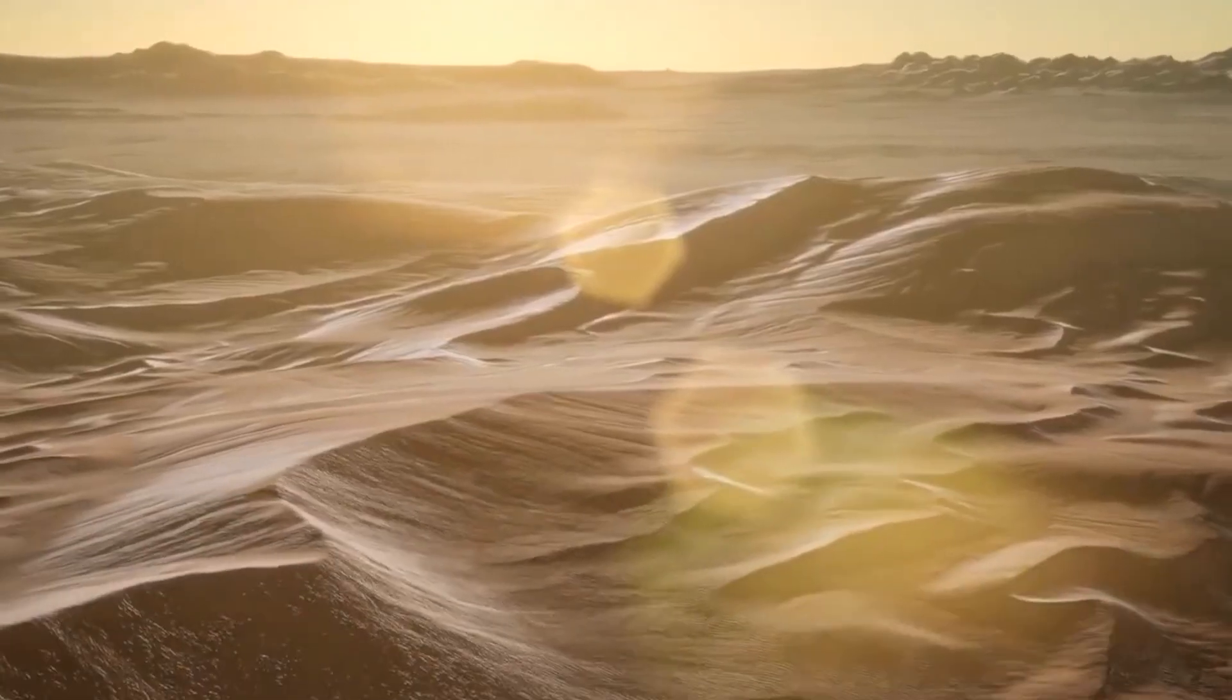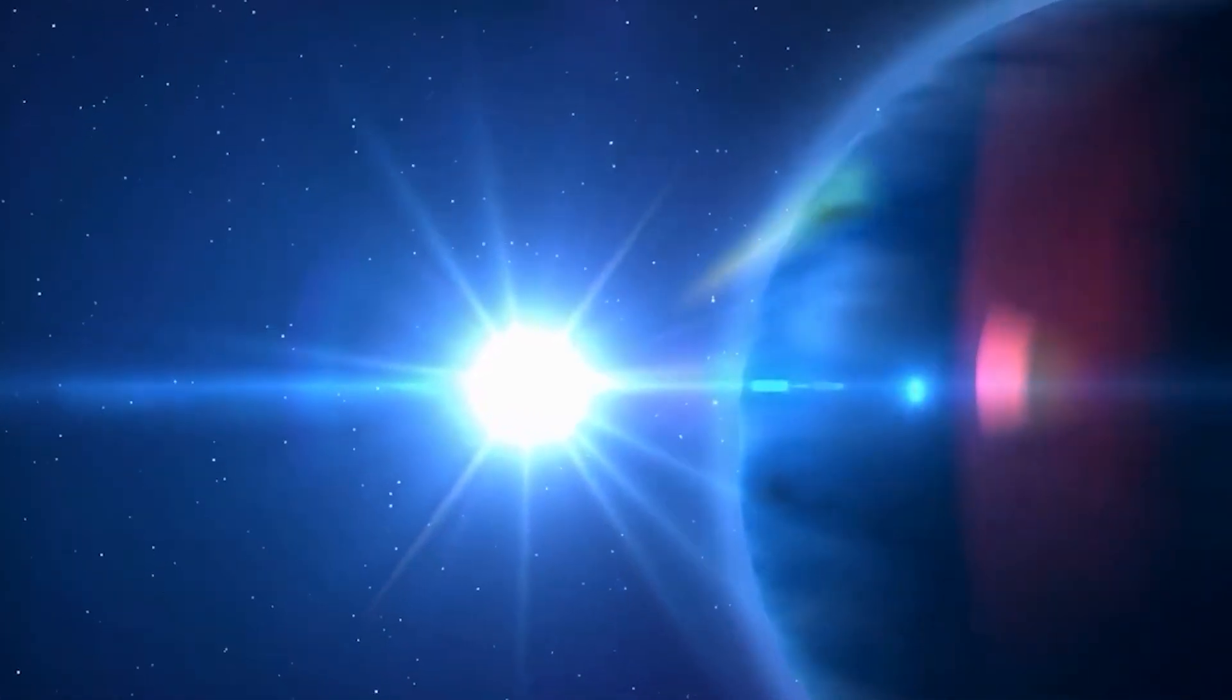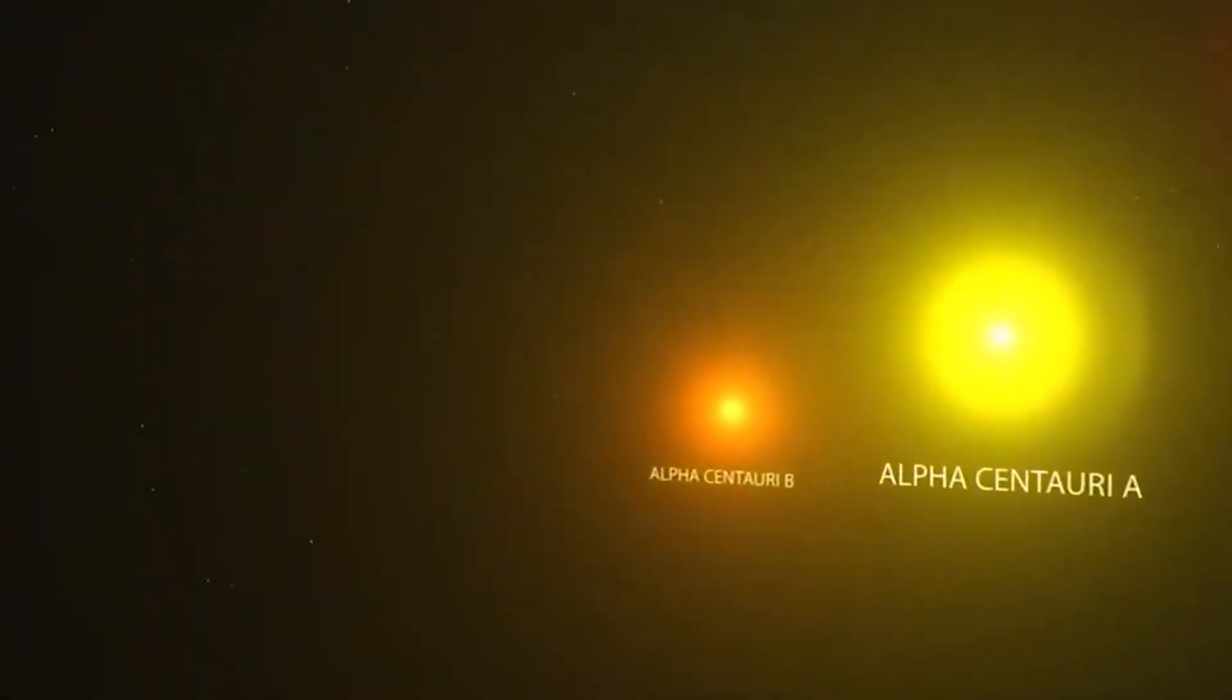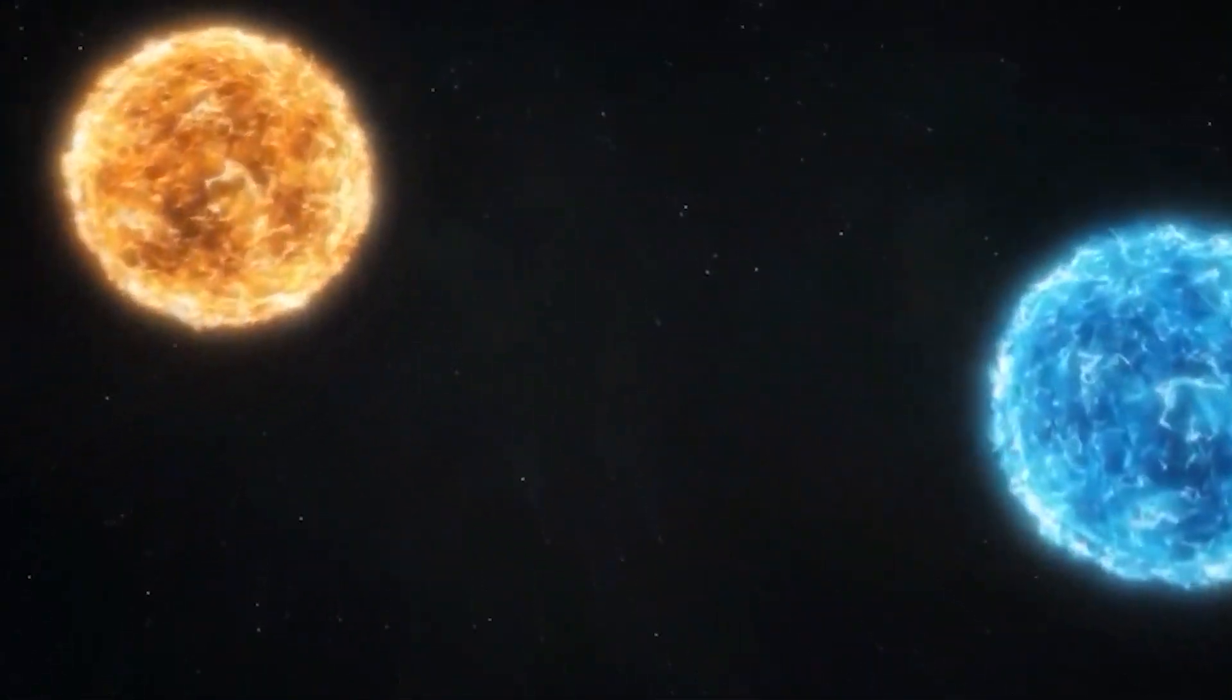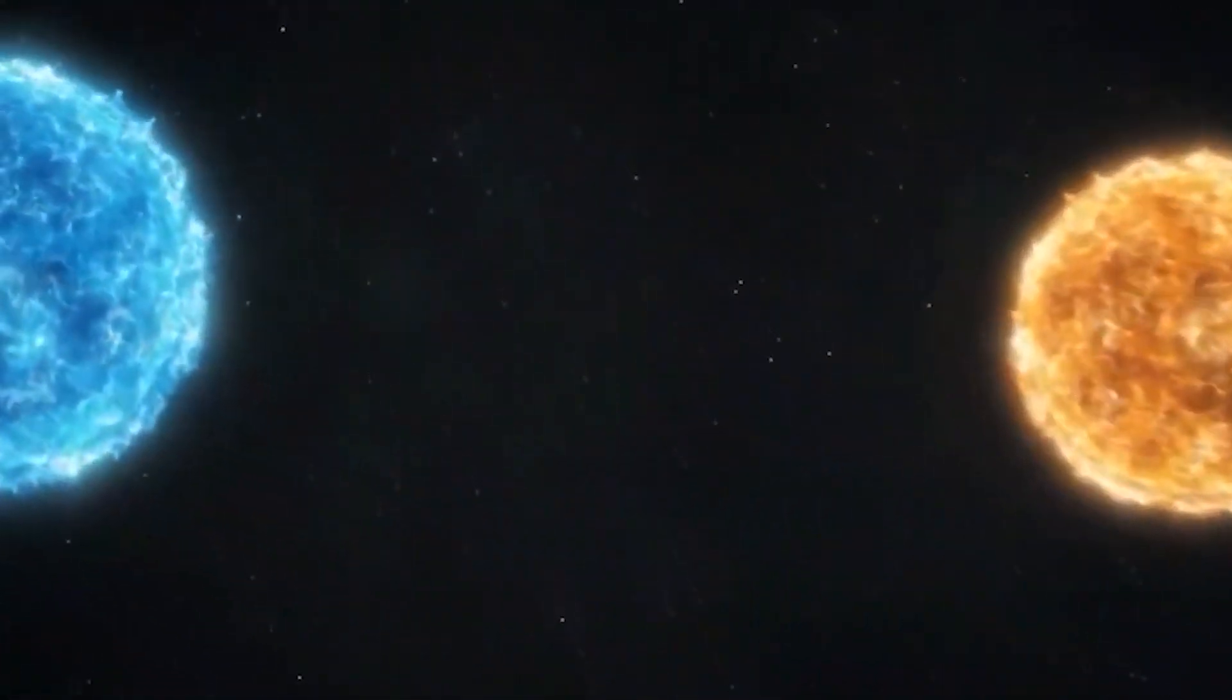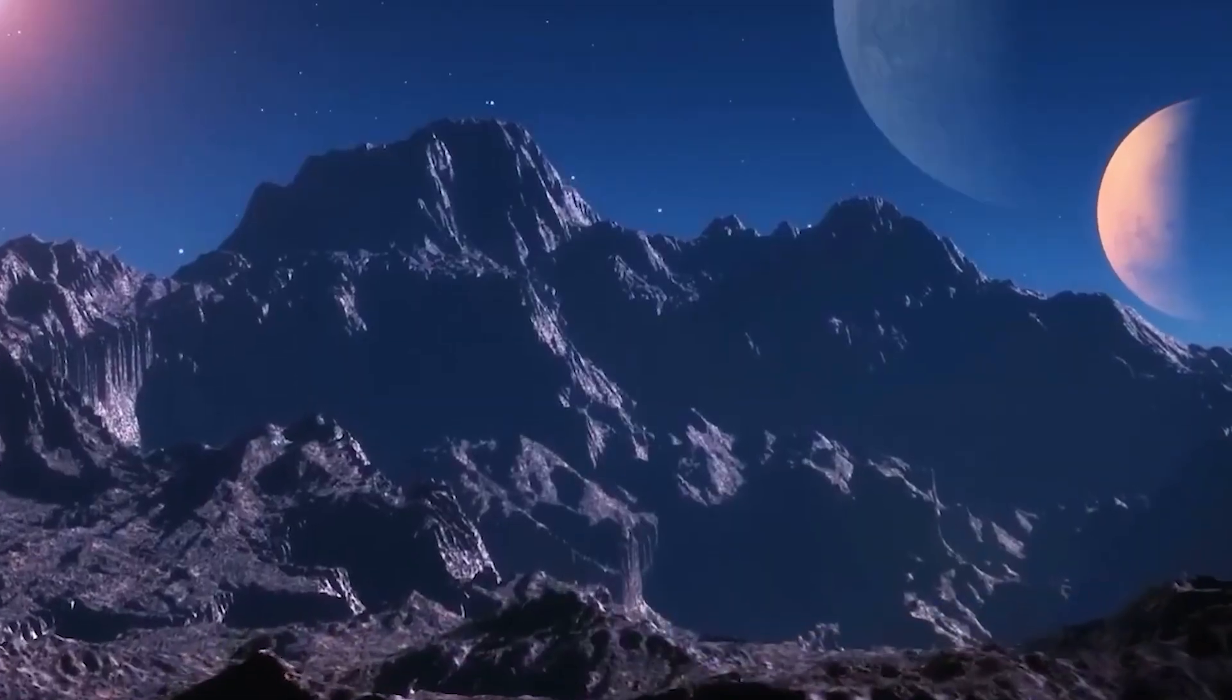And since Proxima b is that close to its host sun, the likelihood of having a proper atmosphere is slim to none. The oxygen and carbon dioxide may build up to toxic levels and the ozone, if any, will be depleted to the point of letting in dangerous radiation levels.